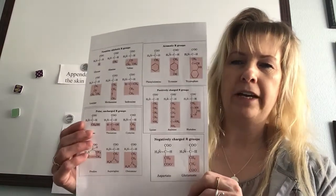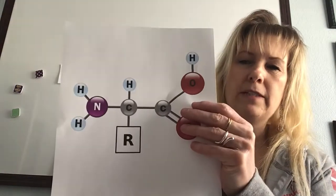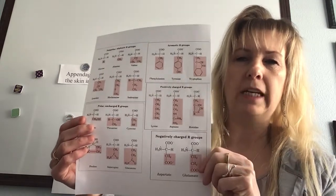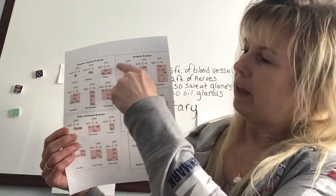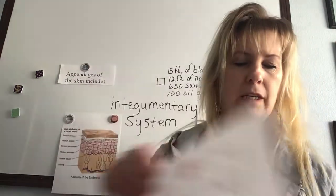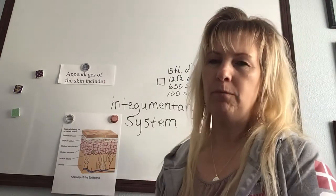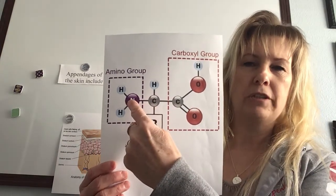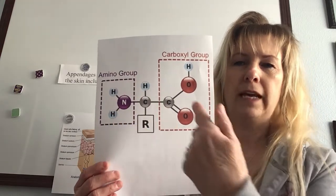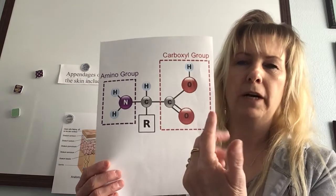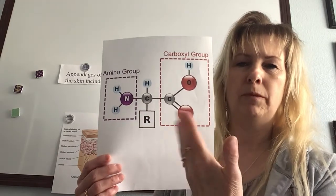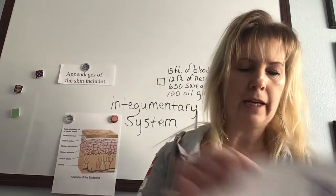Here are all 20 amino acids — the pink portions show the R-groups, which make each one unique and different. They all have the exact same backbone; it's the R-group or side chain that makes each of them different. The name 'amino acid' comes from the central carbon structure: the nitrogen forms the amino group, and the carboxylic acid group gives us the second part of the name.